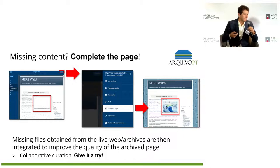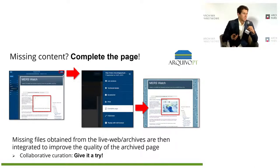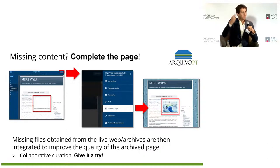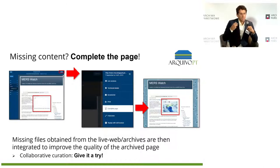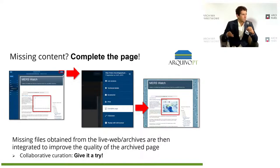On the left you can see a website where an image is missing — it's about coronavirus, I think from 2015, and the page looks obviously incomplete. But if you go to the top right, click on Functions, and select 'Complete Page', we automatically go to the live web and to other web archives, try to get the missing information, and complete the page. The user gets the more complete result shown on the right. We keep this information and afterwards it is integrated into Archive.pt — so anyone can be a web curator of our collection.